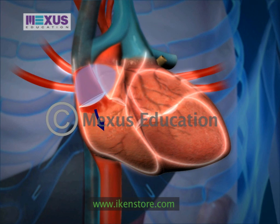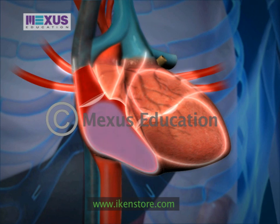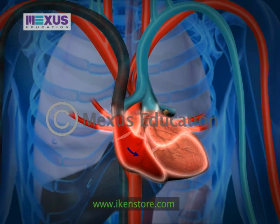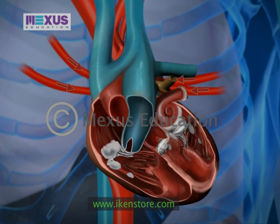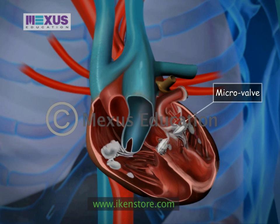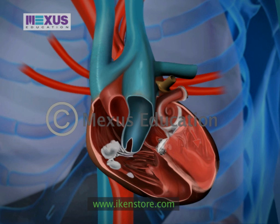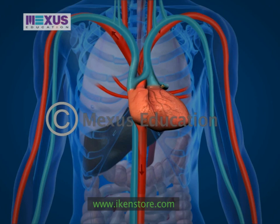From the right ventricle, blood flows through another valve and then to the lungs, where it picks up oxygen. From the lungs, it flows back into the left atrium of the heart and through the mitral valve into the left ventricle.